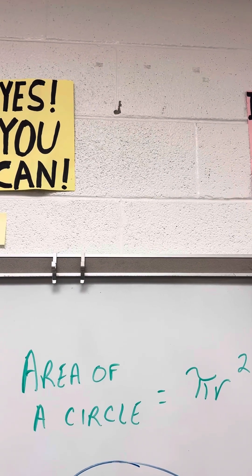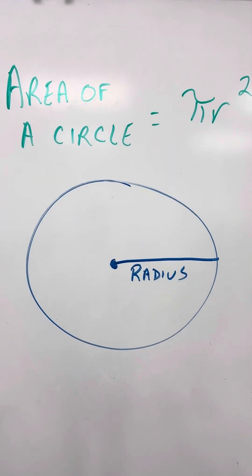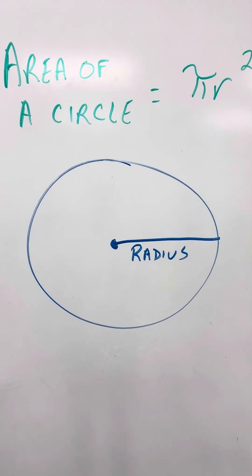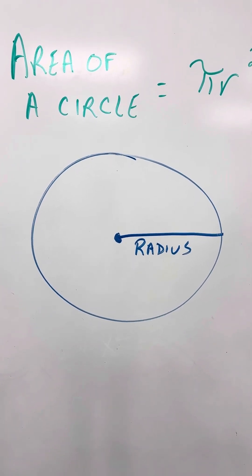What's r? r is the radius of a circle. What's the radius of a circle? This is the radius of a circle. It's the extension from the center to the edge of the circle. That's the radius.